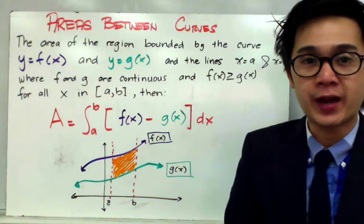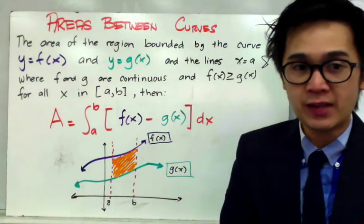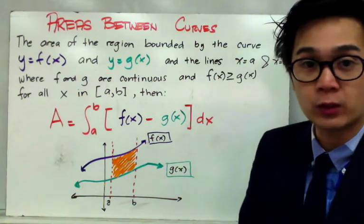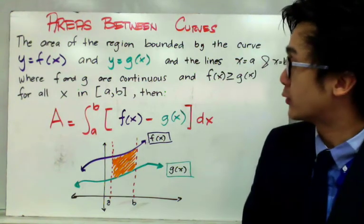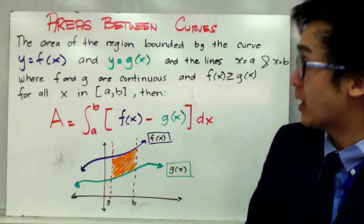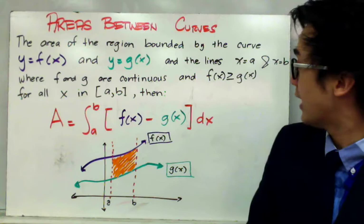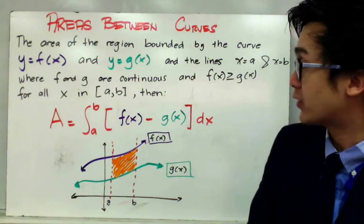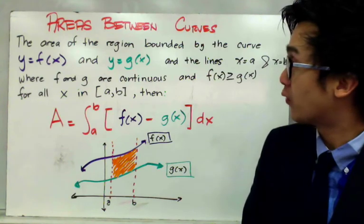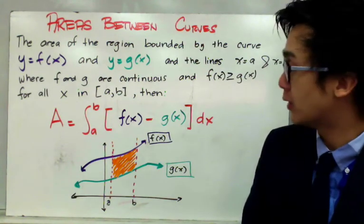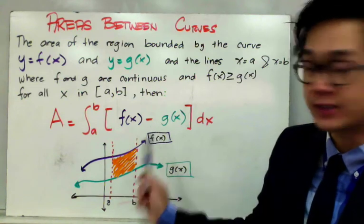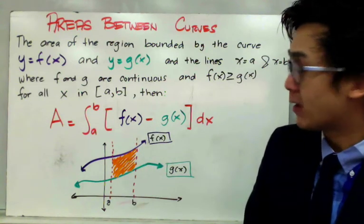Today we're going to use integrals in finding the area between curves. By definition, the area of the region bounded by the curve y = f(x) and y = g(x), and the lines x = a and x = b, where f and g are continuous and f(x) is greater than g(x) for all x in the closed interval [a, b], the formula for finding the area between the two curves will be the integral of f(x) minus g(x) dx from a to b.